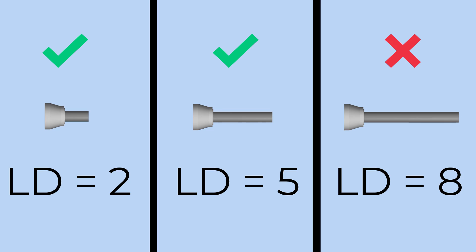Another constraint to keep in mind is the length of the part. As a rule of thumb, make sure the length-to-diameter ratio is never greater than 5. However, at smaller stock diameters, this general guideline does not apply. At smaller diameters, the ratio needs to be even lower. This is because at smaller diameters, the length has a much greater impact on the deflection of the part.